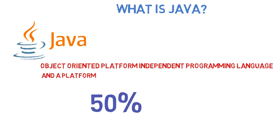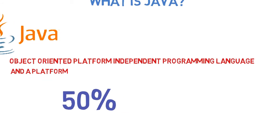For now, forget these jargons — object-oriented, platform-independent, etc. These are the features of Java, which we will see in the upcoming videos. In this video, we will focus on two things: programming language and a platform.